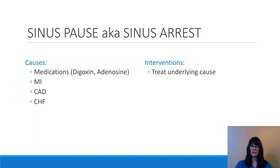Causes for sinus pauses and sinus arrests include medications — think about digoxin or adenosine. Adenosine comes into play when treating supraventricular tachycardia, which will be discussed in a later video. MI, if the SA node receives insufficient blood flow, coronary artery disease, or CHF can all cause sinus pauses and sinus arrests. Always treat the underlying cause.